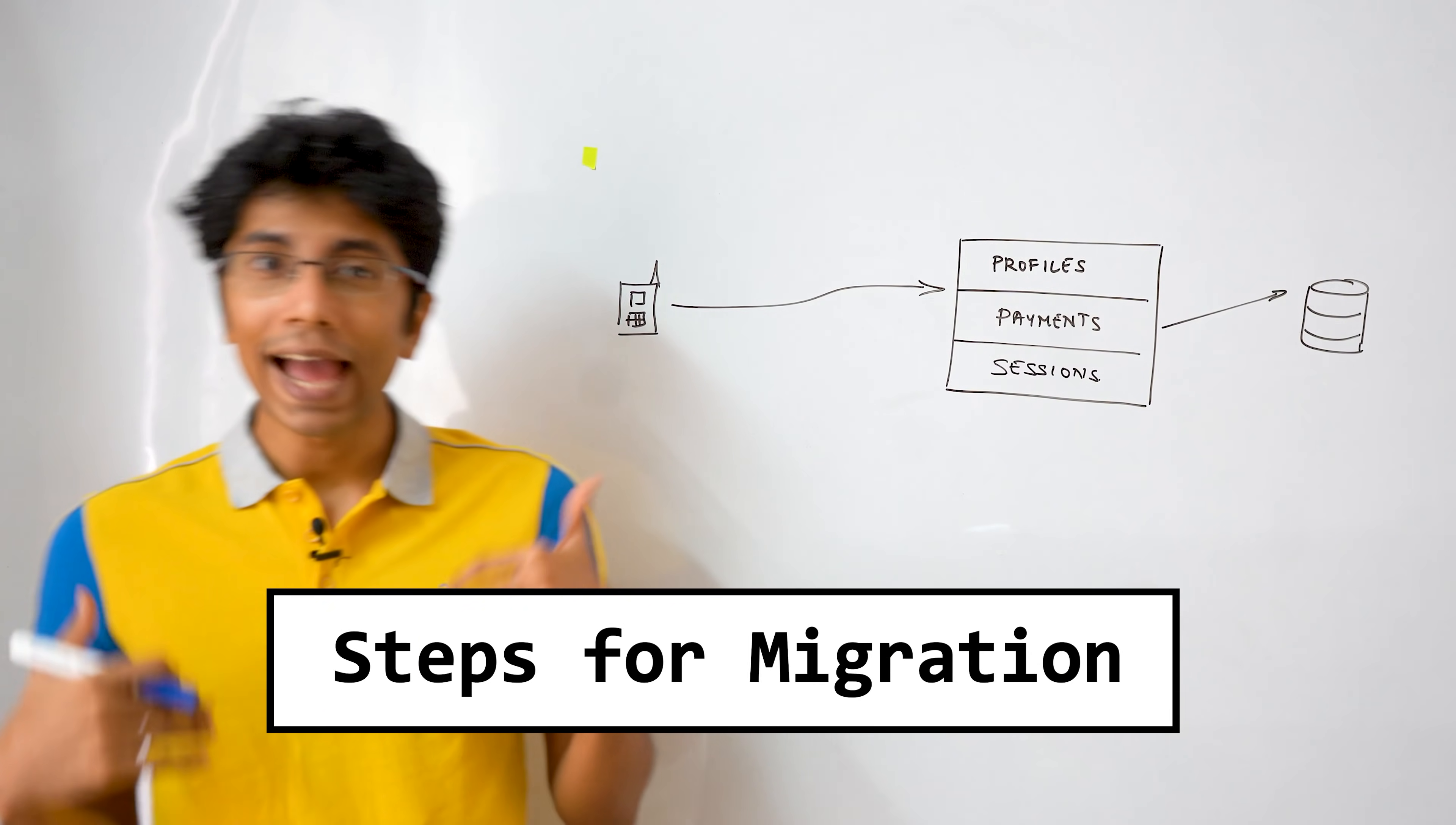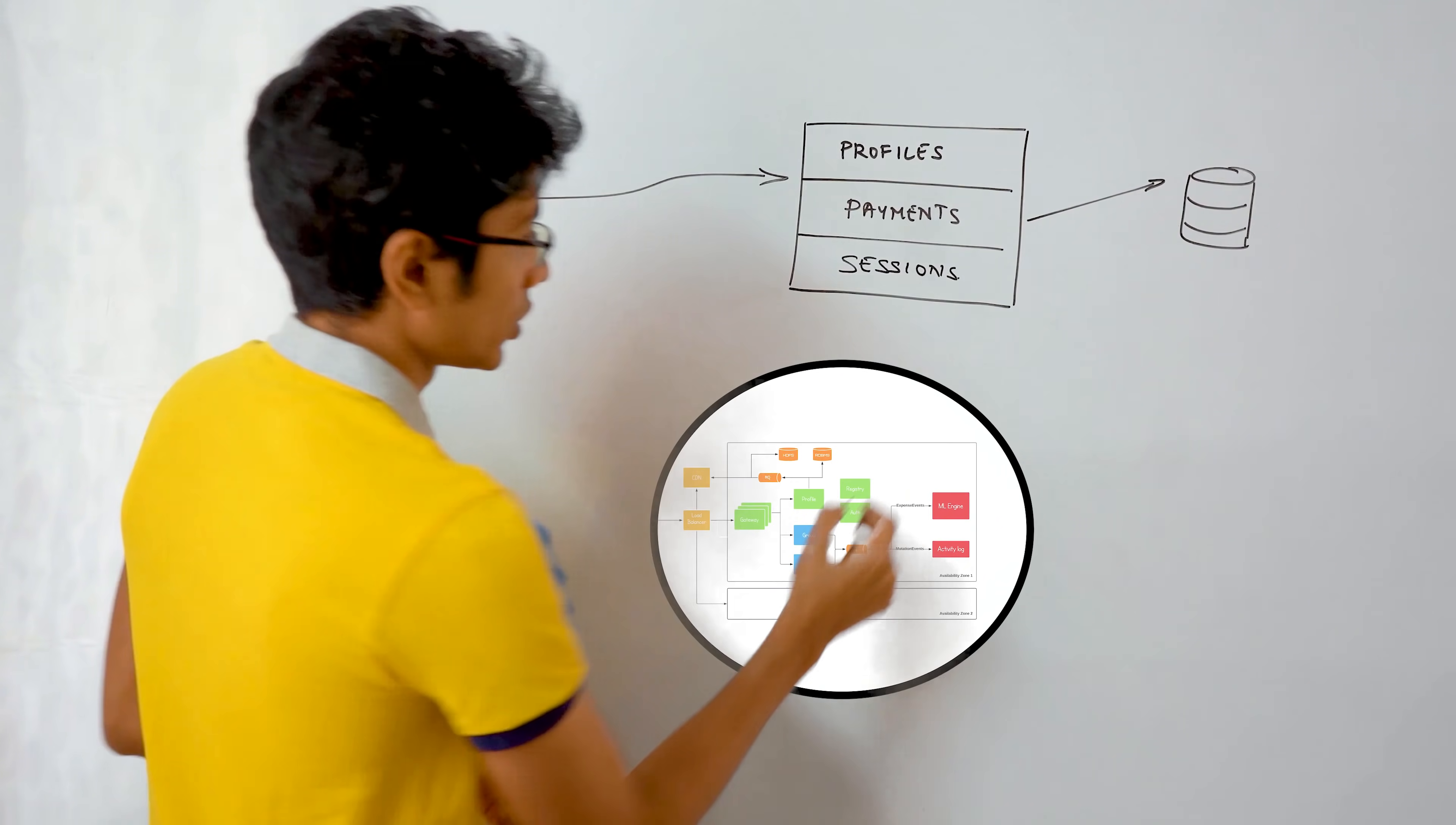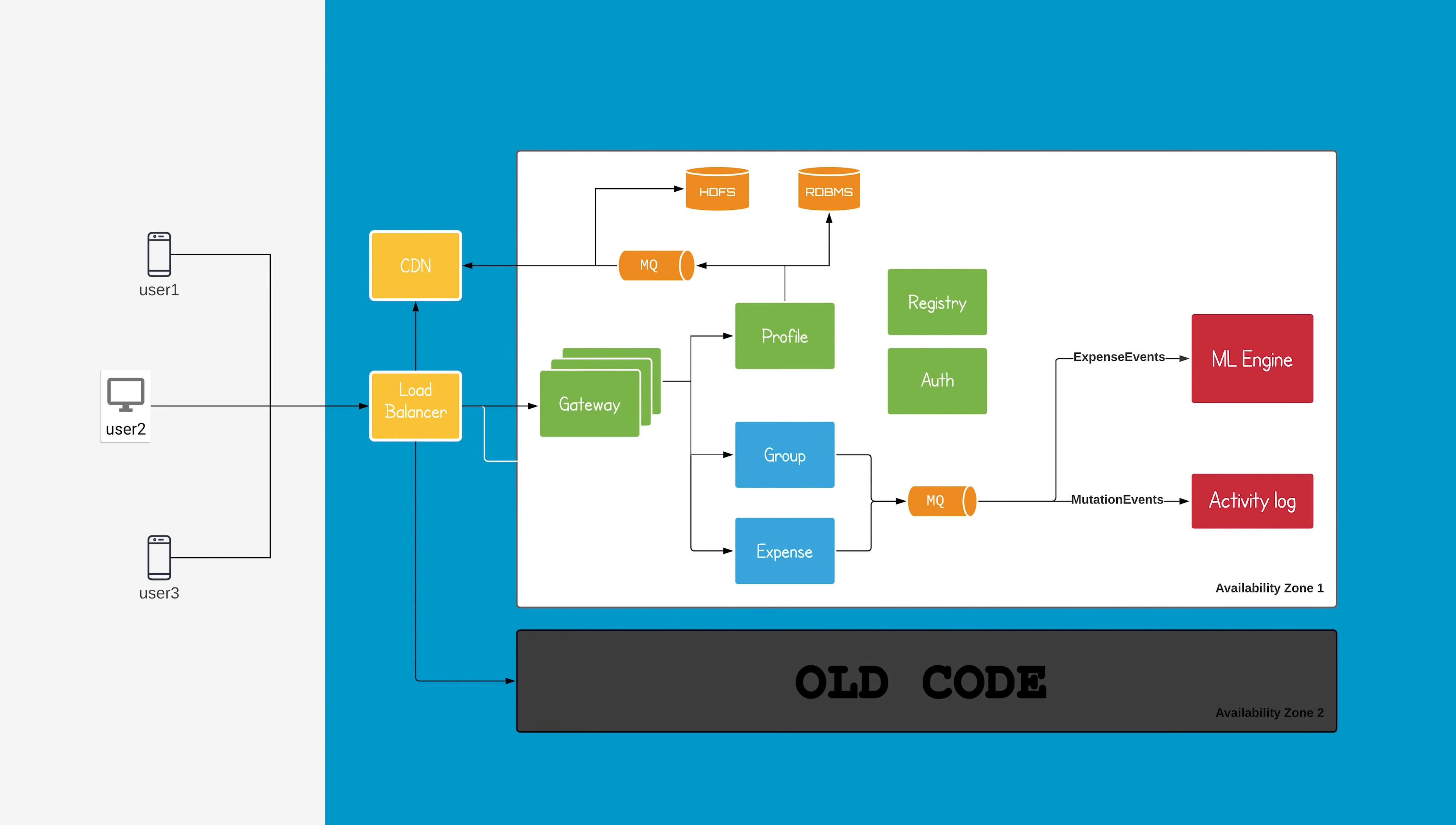Now let's find out how we can actually move from monoliths to microservices. One strategy would be that you make this microservice architecture, where you have this cloud of things running. And then some parts of the user, maybe 10% of the users are redirected here. If they have no issues, if these services are working perfectly along with their databases, then you can make the switch.